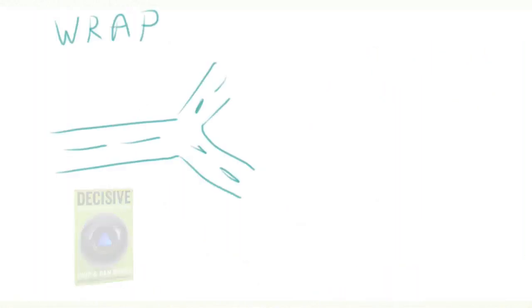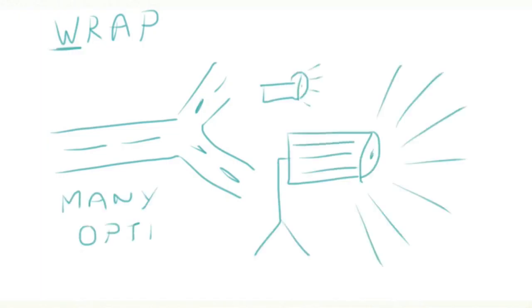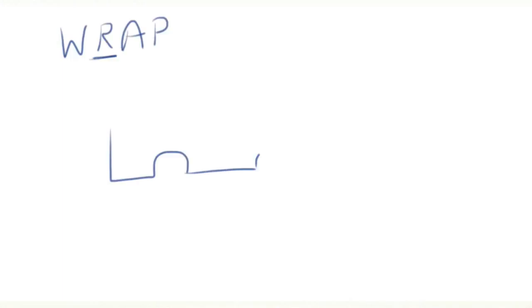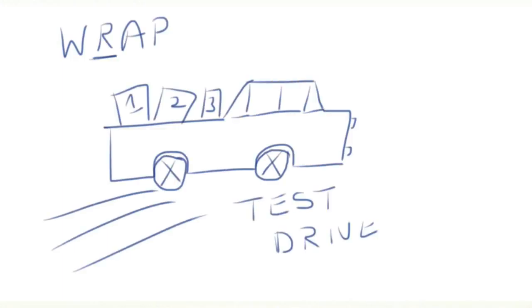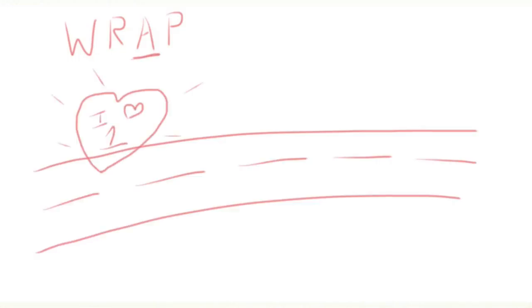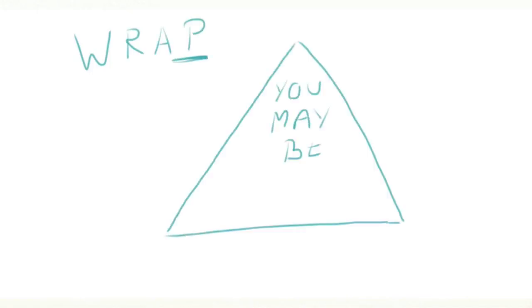They suggest the WRAP process to make better decisions. When you encounter a choice or a decision, don't narrow frame. Instead, widen your options. When you analyze options, reality test your assumptions to overcome the confirmation bias. While making a choice, your short term emotions will tempt you, so attain distance before deciding. Finally, to overcome your overconfidence bias, prepare to be wrong.